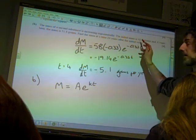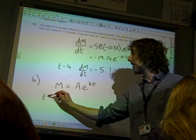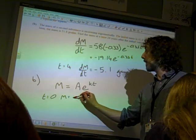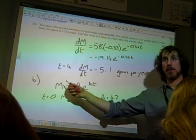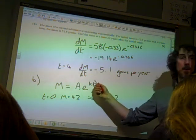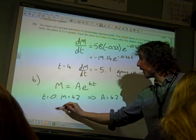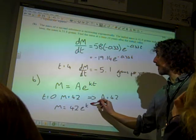And because the initial mass is 42, when t is 0, m equals 42, so that implies that a must be 42. If you sub those into that equation, you get 42 is ae to the 0. So, we've got that m is 42e to the kt.